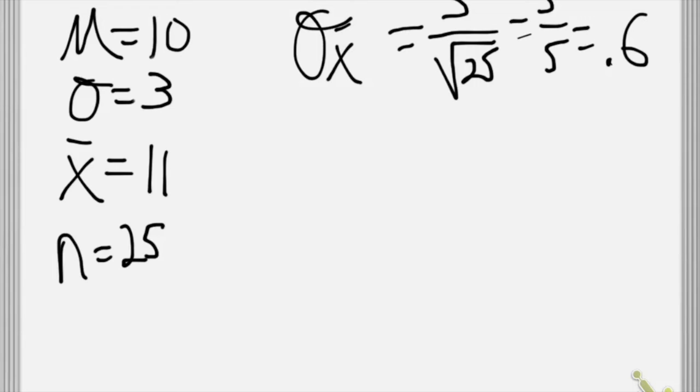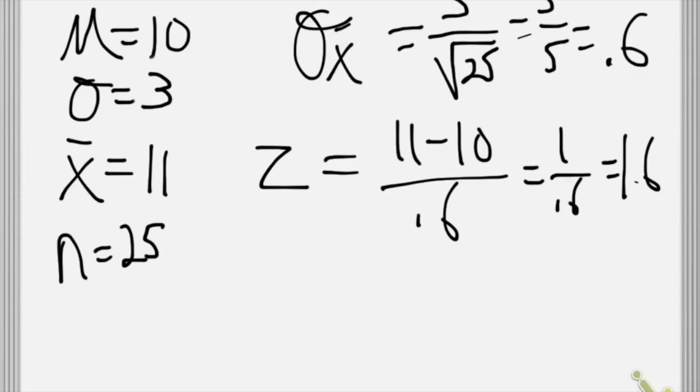Now that we have the standard error of the mean, we can calculate a z-score. And to calculate this, we're going to take the sample mean minus the population mean, divide that by the standard error of the mean, and that gives us 1 divided by 0.6, which is 1.67.